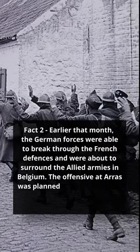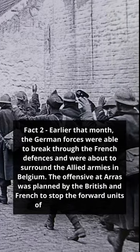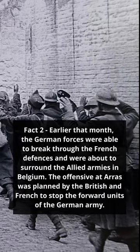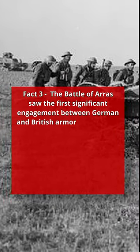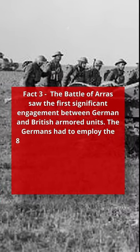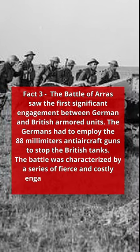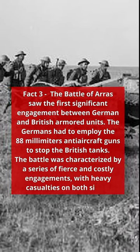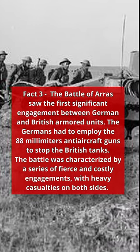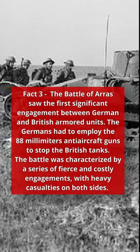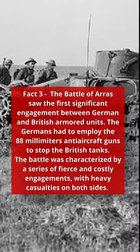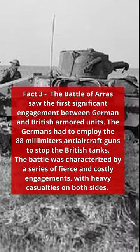The offensive at Eras was planned by the British and French to stop the forward units of the German army. The Battle of Eras saw the first significant engagement between German and British armored units. The Germans had to employ the 88mm anti-aircraft guns to stop the British tanks. The battle was characterized by a series of fierce and costly engagements, with heavy casualties on both sides.